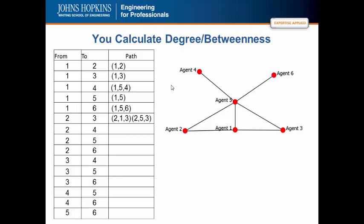Here is something that is interesting and different from the previous example. If we are going to go from agent 2 to 3, there are two shortest paths. We can either go through agent 1 or through agent 5. And I will ask you to keep that in mind as we continue this calculation.